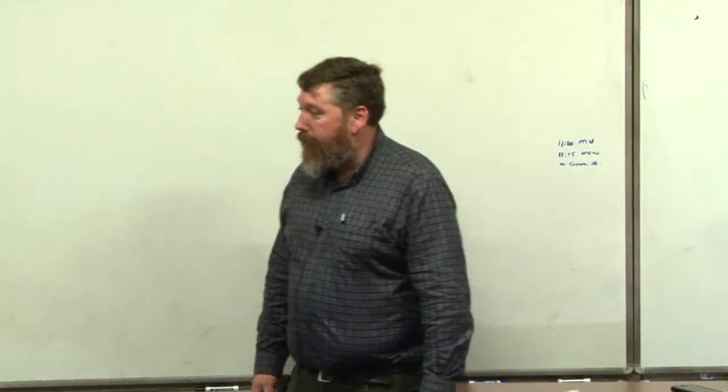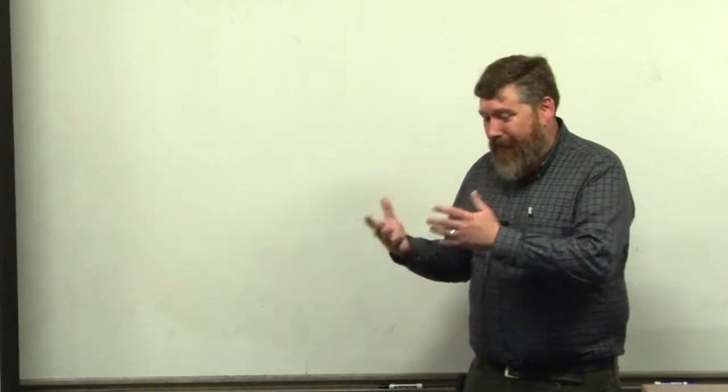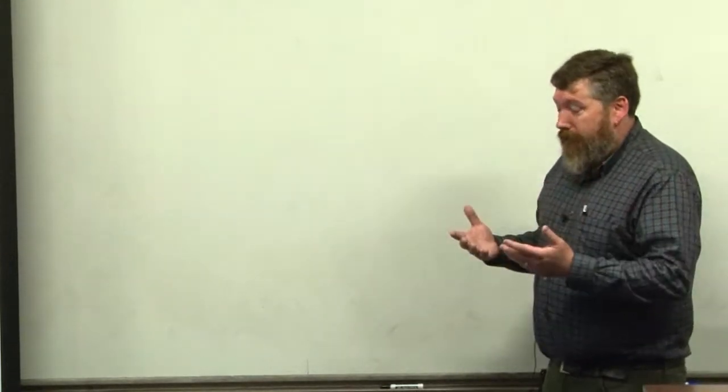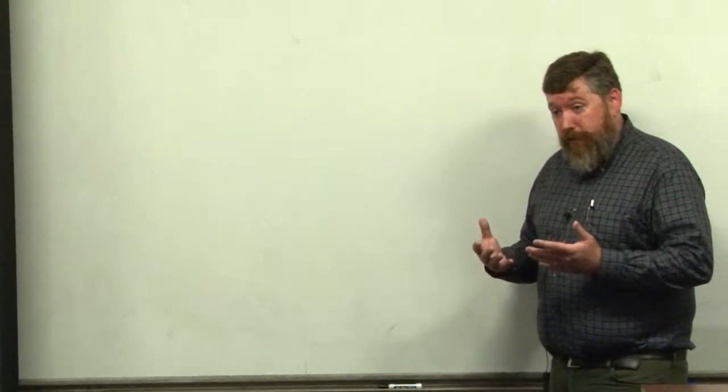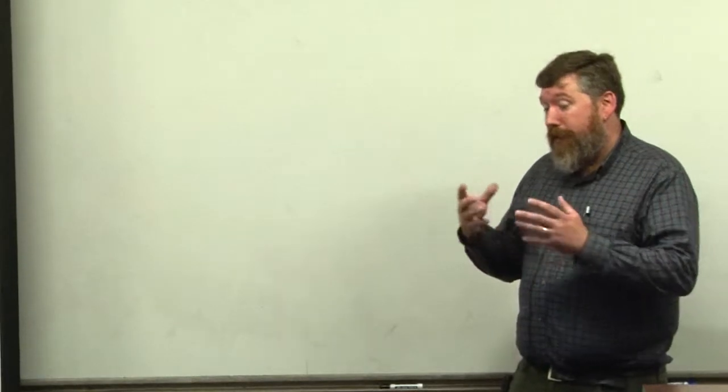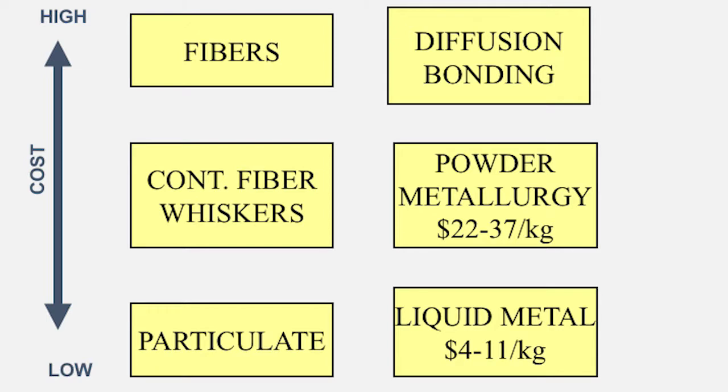There are a variety of ways of manufacturing these composites and from a material science perspective we know that depending on how you process something you're going to be able to affect its structure and affect its properties as well. So there's a relationship between the process, the structure of the material, the microstructure and its properties. There's also a cost element of it as well.